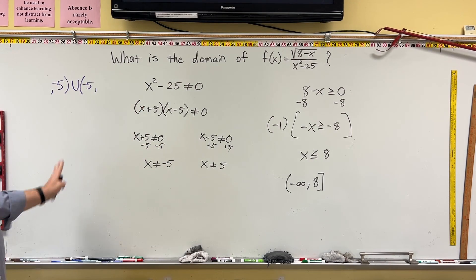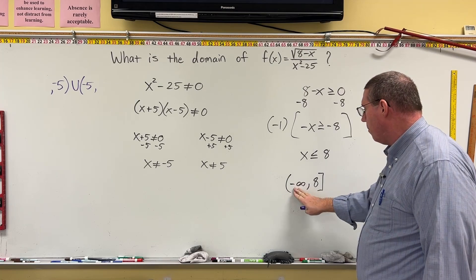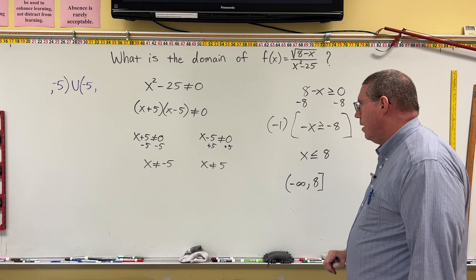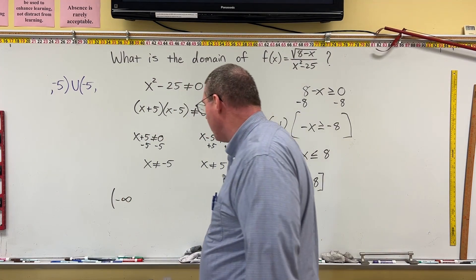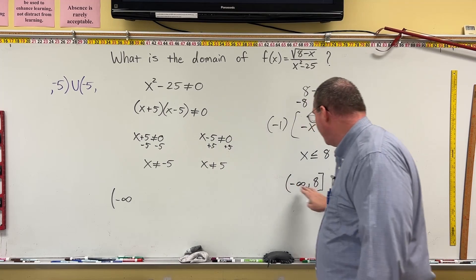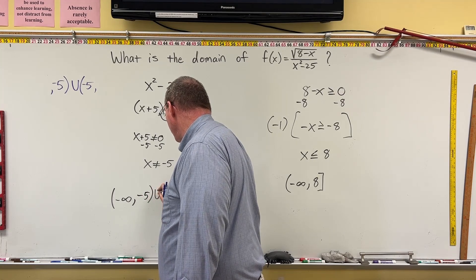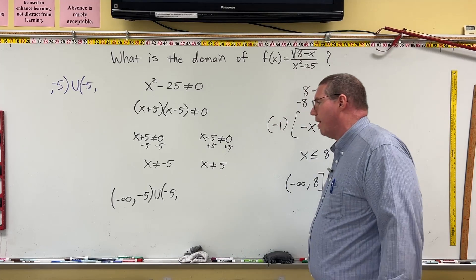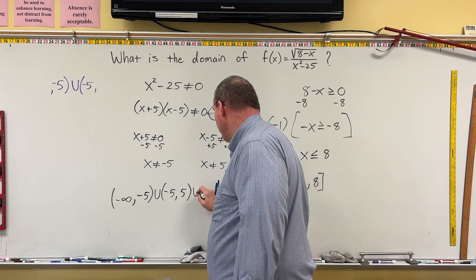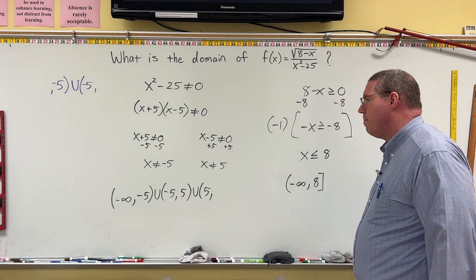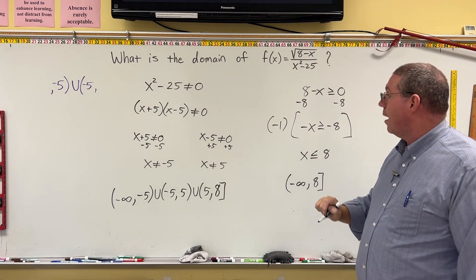We start with negative infinity, then go comma, negative 5, parenthesis, union, parenthesis, negative 5, comma — we've taken care of negative 5. Then we put 5, parenthesis, union, parenthesis, 5, comma — we've gotten rid of 5. Finally we go up to 8 with a bracket, and we're done. This is the domain of that rational function.